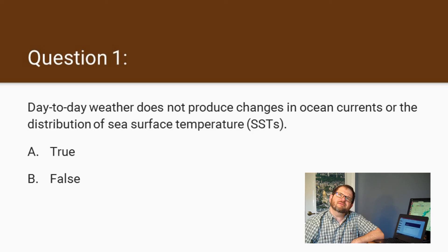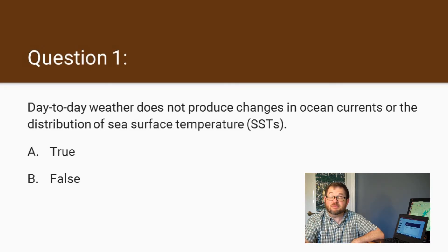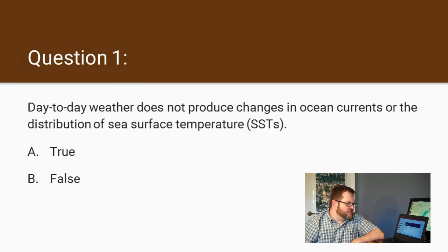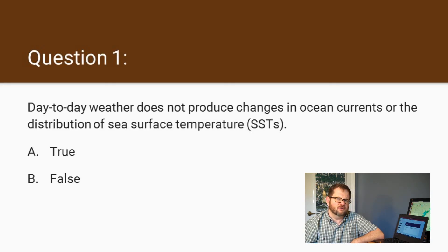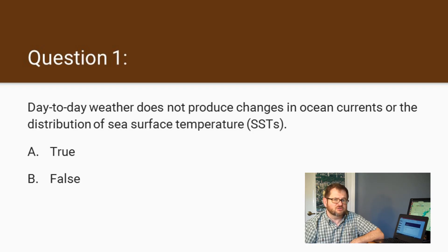So we've talked about the ocean stuff. Before we move forward to other ways the atmosphere could be affected in near-term climate change, let's answer a couple of quick questions. Question one: day-to-day weather does not produce changes in ocean currents or the distribution of sea surface temperatures. True or false? This isn't a question about modeling — does it actually produce changes? Make a choice and get a little feedback before we move on to question two.